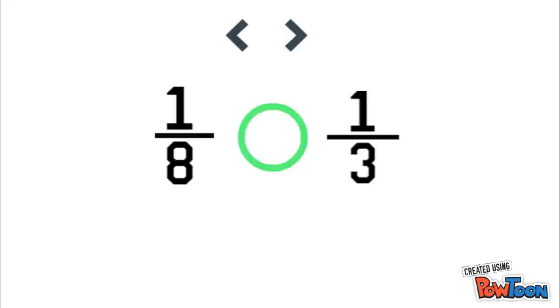So to sum it up, when comparing unit fractions that both have a numerator of one, just look at the smaller denominator because that means it's not split up as much and therefore it's actually greater. Then pick the symbol that is hungry for that side.